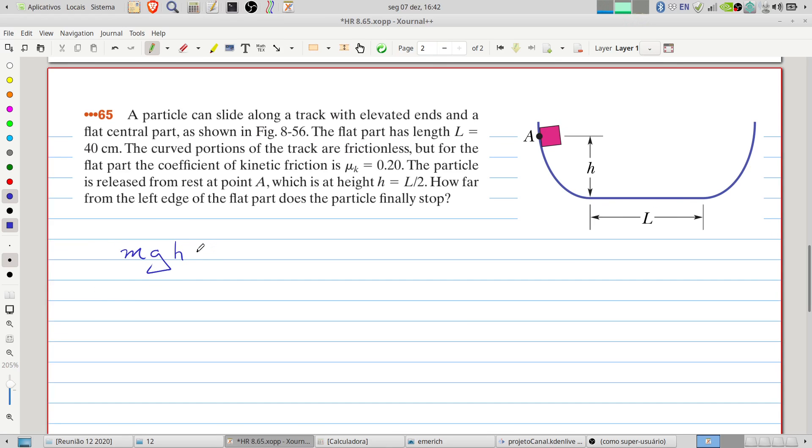This energy will all be, in the final situation, all be transformed into heat by the work done by the friction. Therefore we can write that this energy equals the work done by the friction, that is the friction force, the kinetic friction force multiplied by the total displacement of the particle.